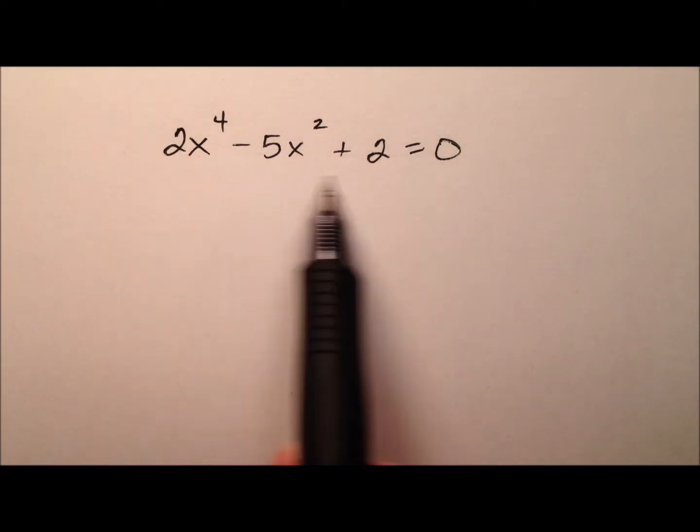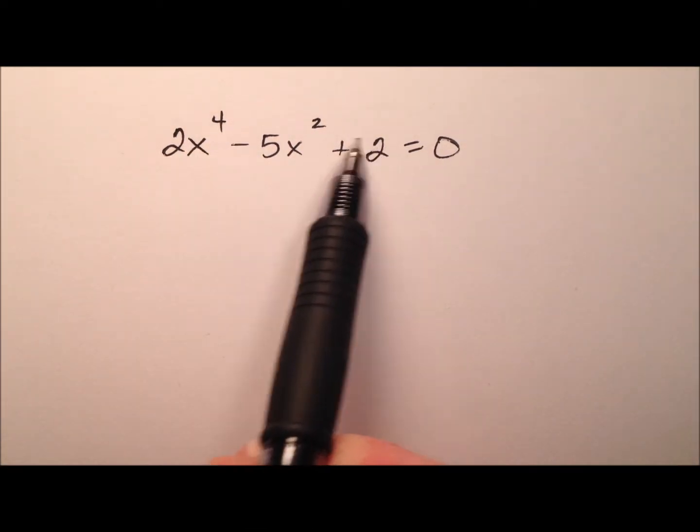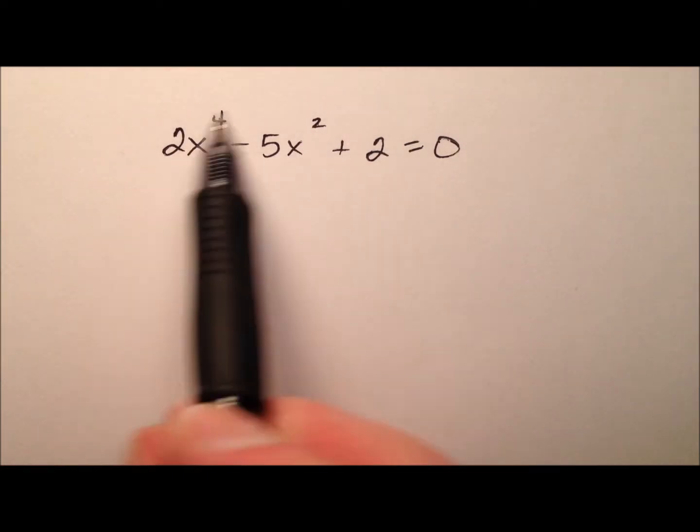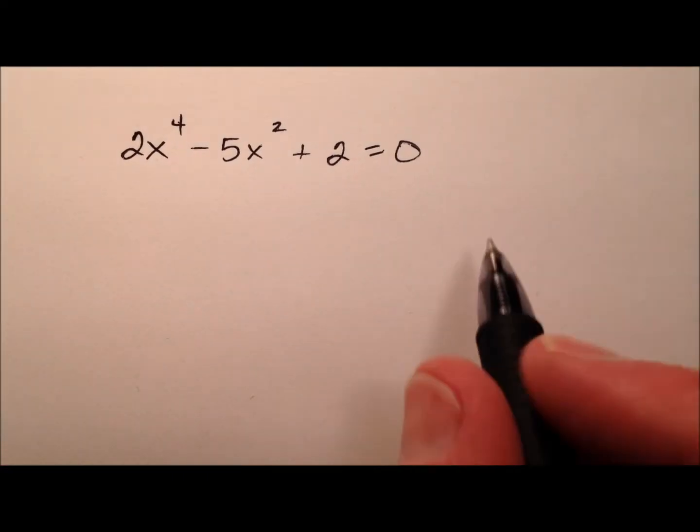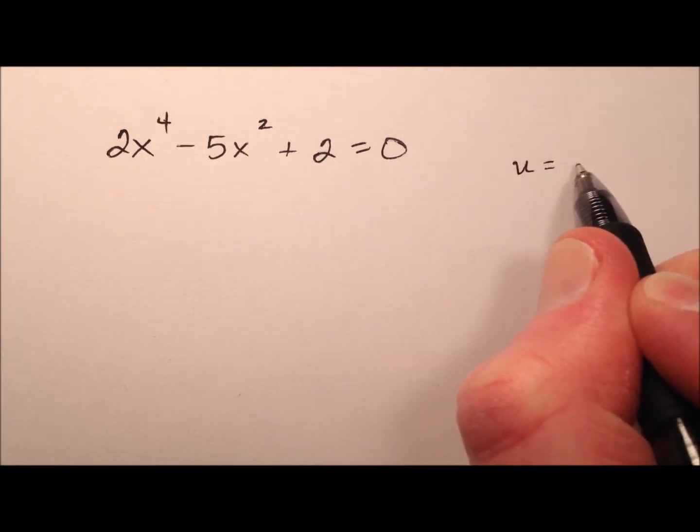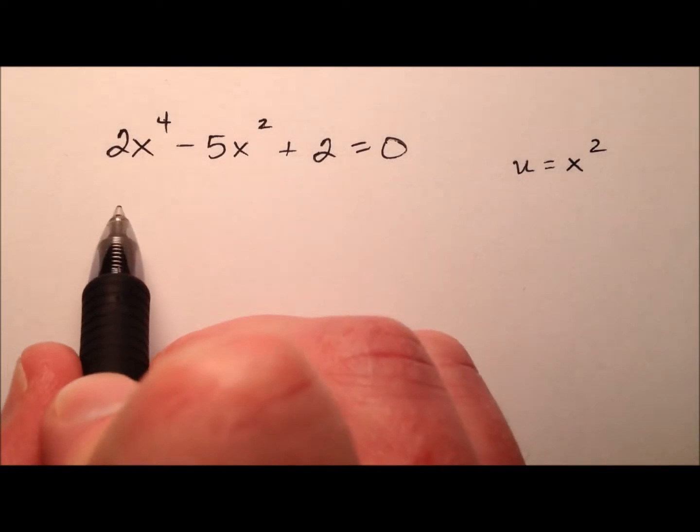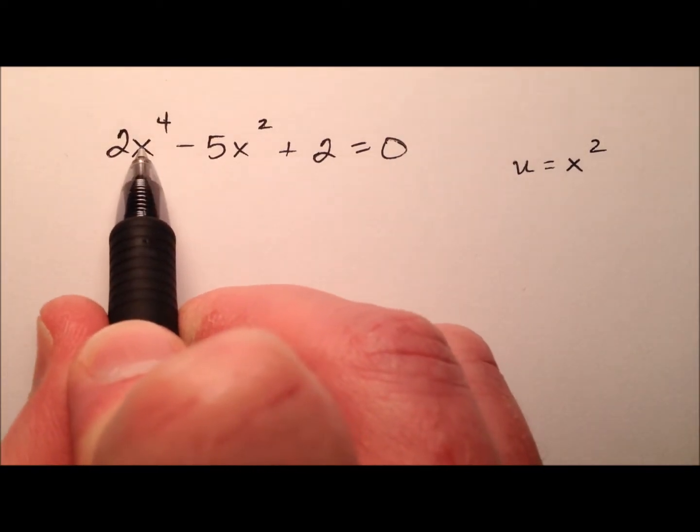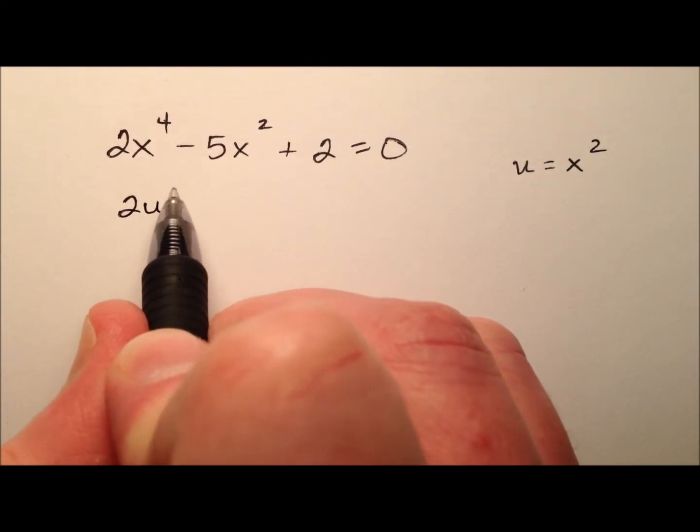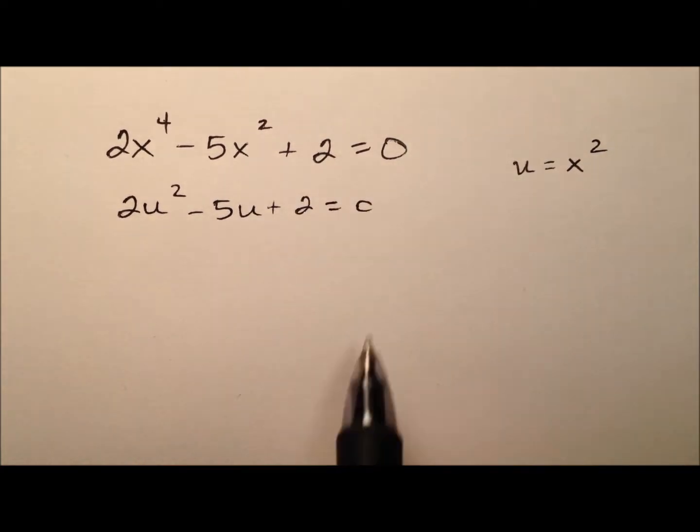Using a u-substitution, we can take this down a couple of powers. Instead of having x to the fourth and x squared, let's make this more like a quadratic. We can accommodate this by saying u equals x squared. This converts the equation - instead of x's, we'll have u's. So it looks like 2u squared minus 5u plus 2 equals 0.